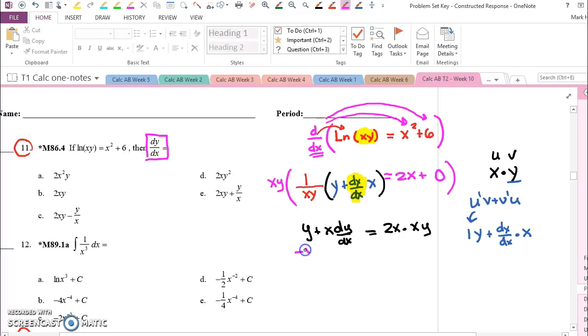Now we need to get rid of the y. So I'll subtract y and I have x dy/dx equals 2x squared y minus y. And now I will divide everything by x.